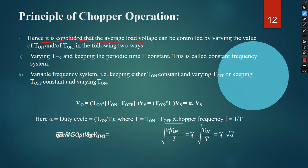The average load voltage can be controlled by varying on-time and off-time in two ways: T constant (pulse width modulation), or T_on constant with varying T_off / T_off constant with varying T_on (variable frequency modulation).